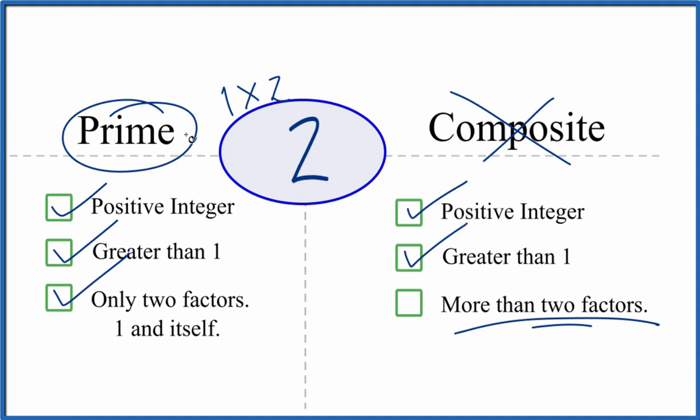This is Dr. V looking at whether 2 is a prime number or a composite number. It is a prime number. Thanks for watching.